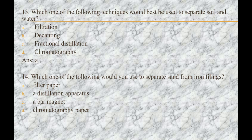Next question is: which one of the following would you use to separate sand from iron filings? Options are: A) filter paper, B) a distillation apparatus, C) a bar magnet, D) a chromatography paper. The answer is C, that is a bar magnet.